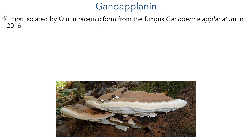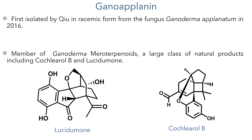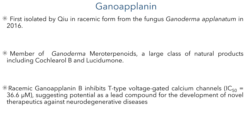Ganoaplanin was first isolated by Chew in racemic form from the fungus Ganoderma aplanatum in 2016. This compound is a member of the Ganoderma meroterpenoids, a large class of natural products including Cochlearol B and Lucidamone, two compounds we've previously seen on this channel. Initial studies into the bioactivity of ganoaplanin B showed that the racemic mixture inhibits T-type voltage-gated calcium channels with an IC50 of 36.6 micromolar, suggesting potential as a lead compound for novel therapeutics against neurodegenerative diseases.